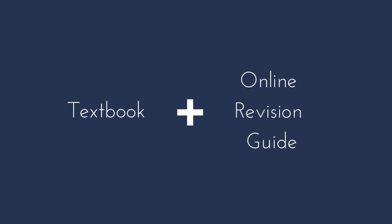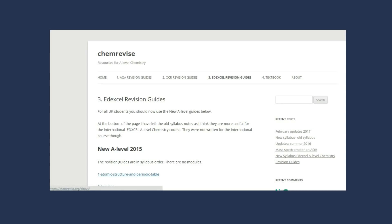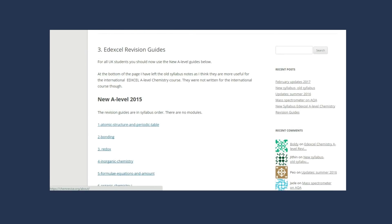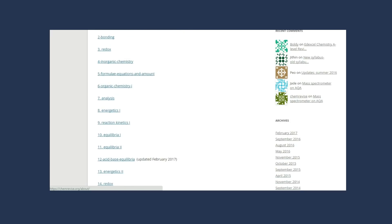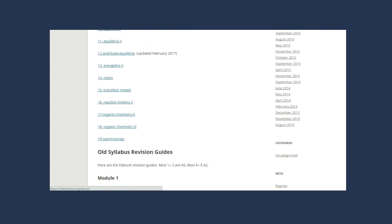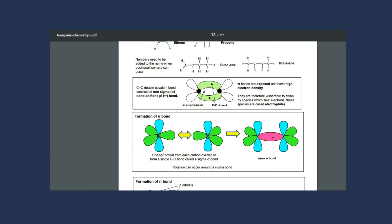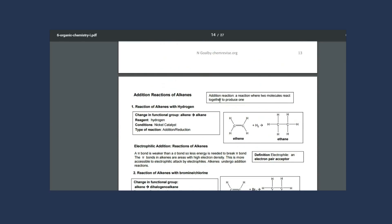I also use these revision guides that I found online and they're called Chem Revised. I found that they just lay things out that the book would over-complicate in a very concise and helpful manner. So I just printed these out and made my own notes from the revision guide and from the book.